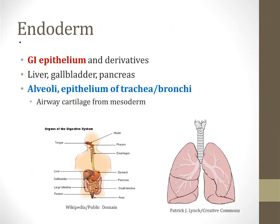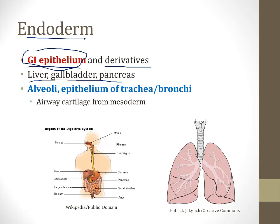Now let's talk about the endoderm. The major structure that derives from this germ layer is the GI epithelium and other structures that are derivatives of the GI tract. For example, the liver, gallbladder, and pancreas all develop as offshoots of the GI epithelium and therefore also come from endoderm. Much of your lungs comes from endoderm as well — the alveoli and the epithelium of the trachea and bronchi — though the cartilage in the airways comes from mesoderm.